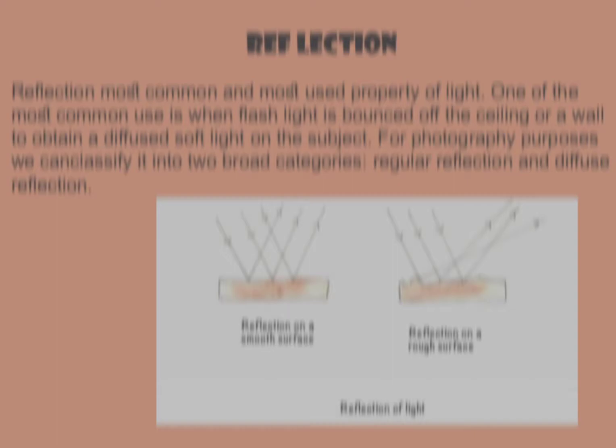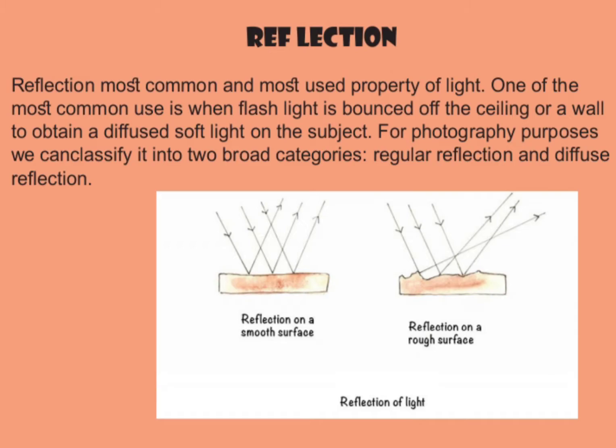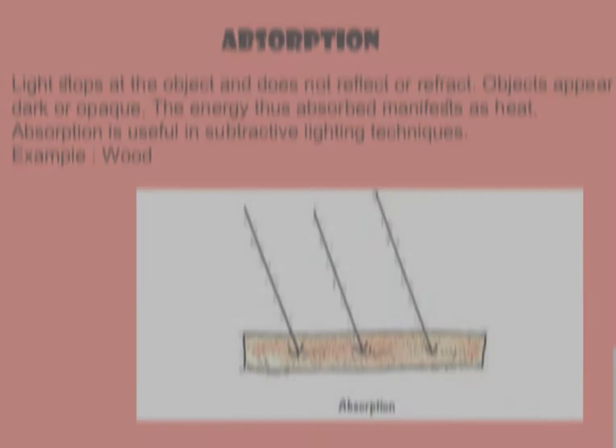Reflection is the most common and most used property of light. One common use is when a flashlight is bounced off the ceiling or a wall to obtain a diffuse, soft light on the subject. For photography purposes, we can classify reflection into two broad categories: regular reflection and diffuse reflection. For example, a mirror or glass reflects light at an angle equal to the angle of the incoming light wave, while with diffuse reflection — like the Earth's atmosphere — light waves bounce off at many angles because the surface is uneven. That is why the sky is blue.